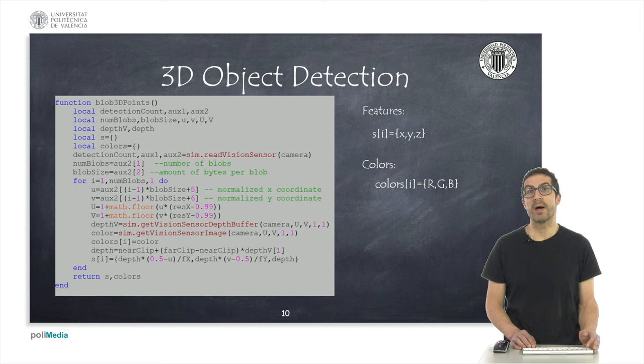As you can see, in the for loop, I extract all the information that the camera returns, and store it in the variable s that contains the coordinates x, y, and z of detected objects.